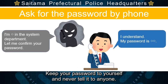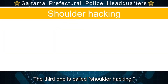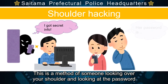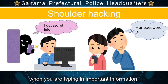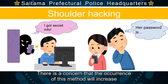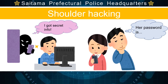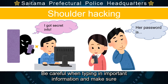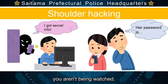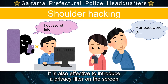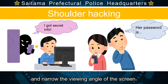The third example is called shoulder hacking. This is a method where someone looks over your shoulder and observes your password when you are typing in important information. There is concern that this method will increase due to the spread of telework where you can choose your place to work. Be careful when typing in important information and make sure you aren't being watched. It is also effective to use a privacy filter to narrow the viewing angle of the screen.